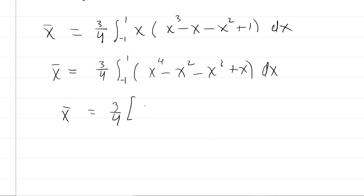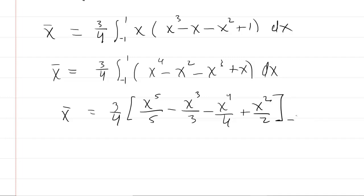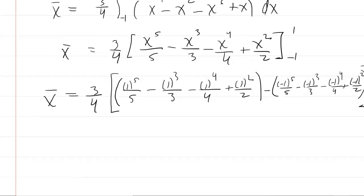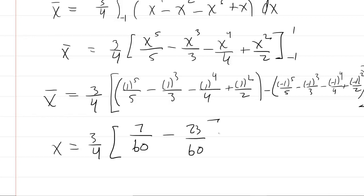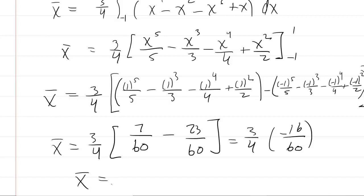Using power rules, integrate term by term and evaluate from negative 1 to 1. Plugging in the upper bound of 1 gives 7 sixtieths, and the lower bound gives 23 sixtieths. So we have 3 fourths multiplied by negative 16 over 60, which simplifies to negative 0.2, also known as negative 1 fifth. The x-coordinate of the centroid is negative 1 fifth.